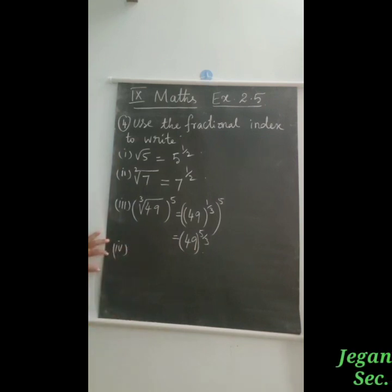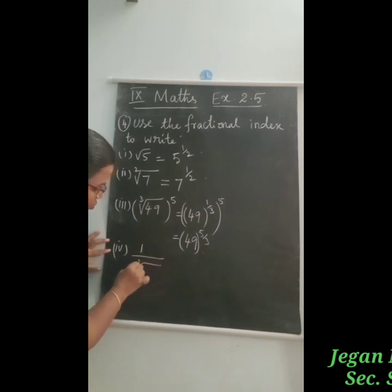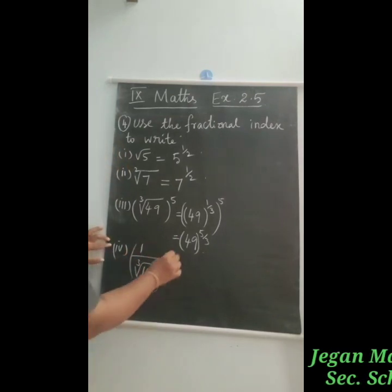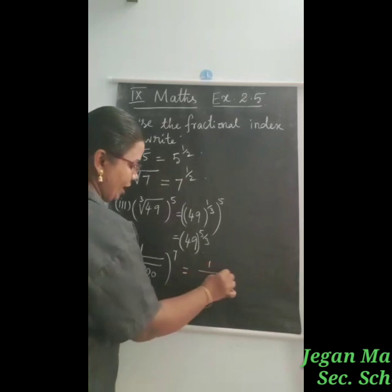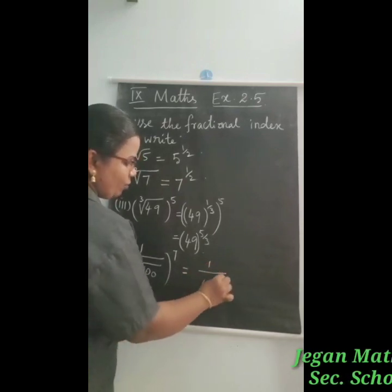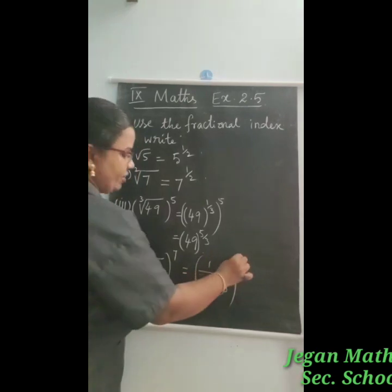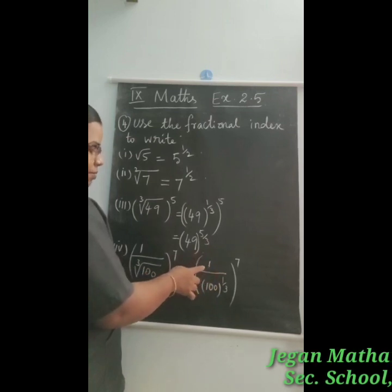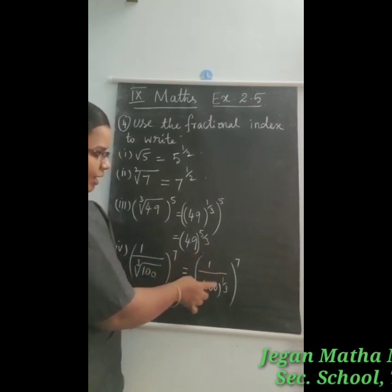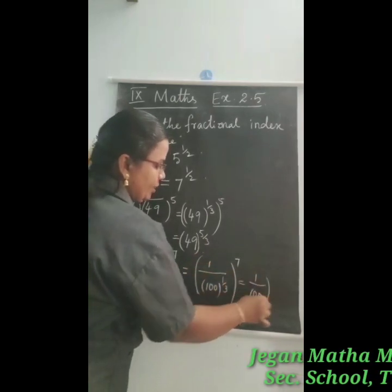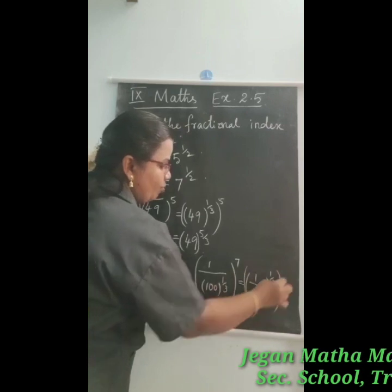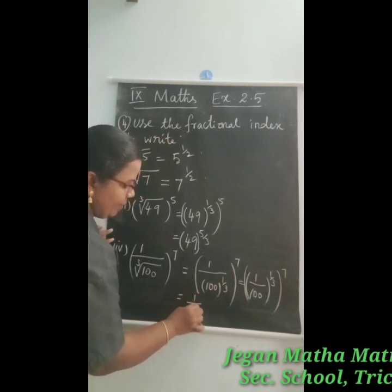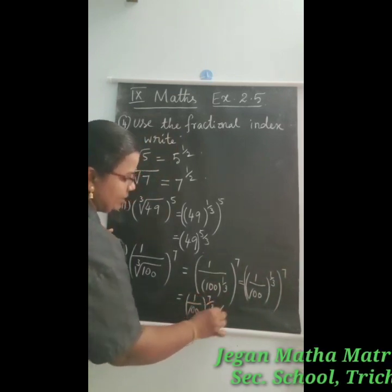The fourth part is cubic root of 1 by 100, the whole power 7. Cubic root means power 1 by 3, so we write 1 by 100 the whole power 1 by 3, then raised to the whole power 7. Multiplying the two powers: 1 by 3 into 7 equals 7 by 3. So the answer is 1 by 100 the whole power 7 by 3.